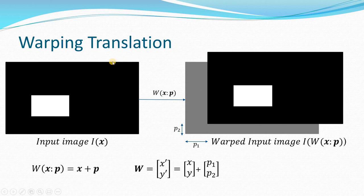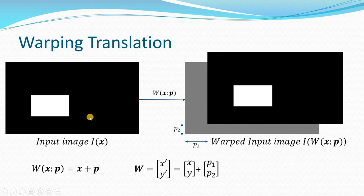Now let's see what warping is. We are going to focus on translation for now and extend this to other transformations as well. Suppose I have an input image and I am going to warp it. Warping is just a new name for transformation. W of X semicolon P is the function that transforms the image. P is again a vector. W of X comma P translates X by P1 and Y by P2 — that is the basic translation operation.